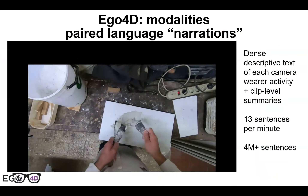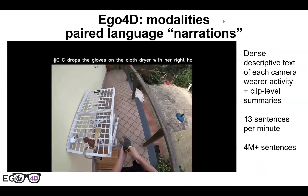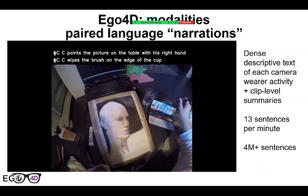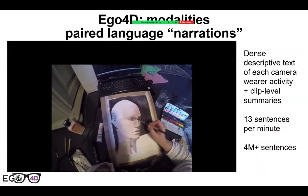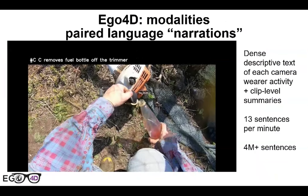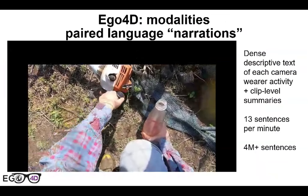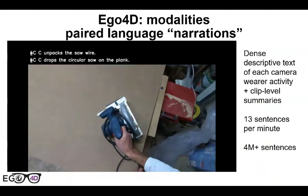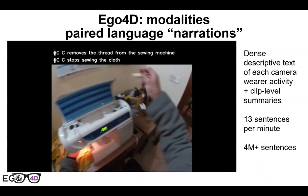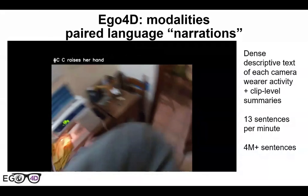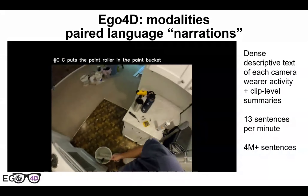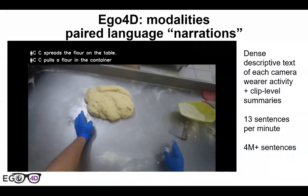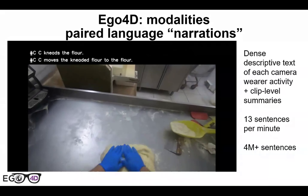The other modality to highlight is language. With Ego4D, for every single clip and frame there are accompanying timestamped narrations — natural language, free-form, play-by-play descriptions of the actions of the camera wearer. For example: 'C closes the bottle, picks up the circular saw, removes nylon tangled on the saw, drops the saw on the plank.' There are more than 4 million sentences like this, with about 13 sentences per minute of this dense descriptive narration text.